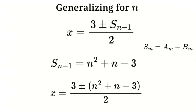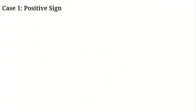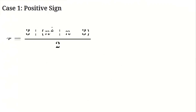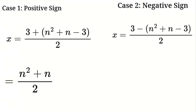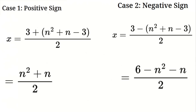Substituting s(n minus 1) into the equation: x equals (3 plus or minus (n² plus n minus 3)) divided by 2. Considering both cases — Case 1 (positive sign): x equals (3 plus n² plus n minus 3) divided by 2, combining like terms gives x equals (n² plus n) divided by 2. Case 2 (negative sign): x equals (3 minus n² minus n plus 3) divided by 2, distributing the negative sign gives x equals (6 minus n² minus n) divided by 2.